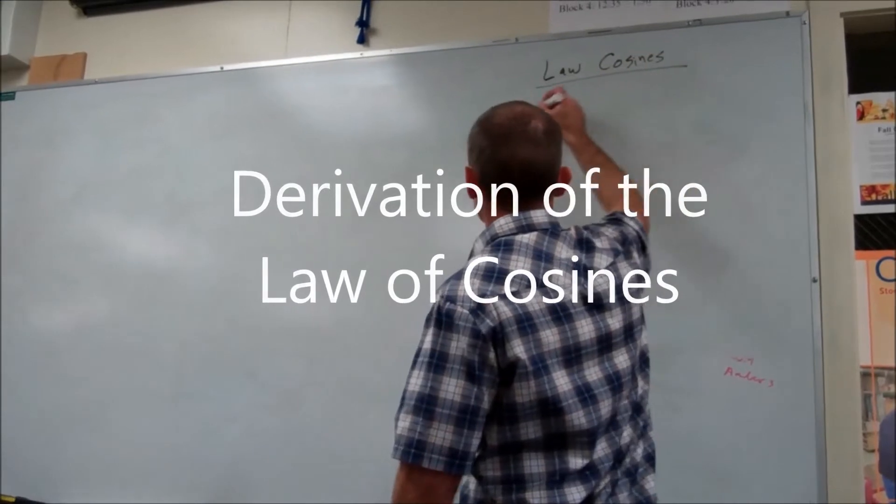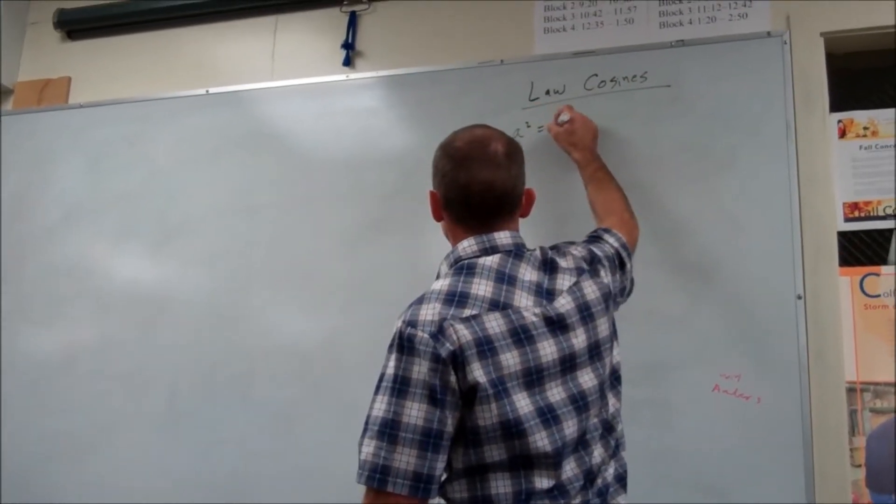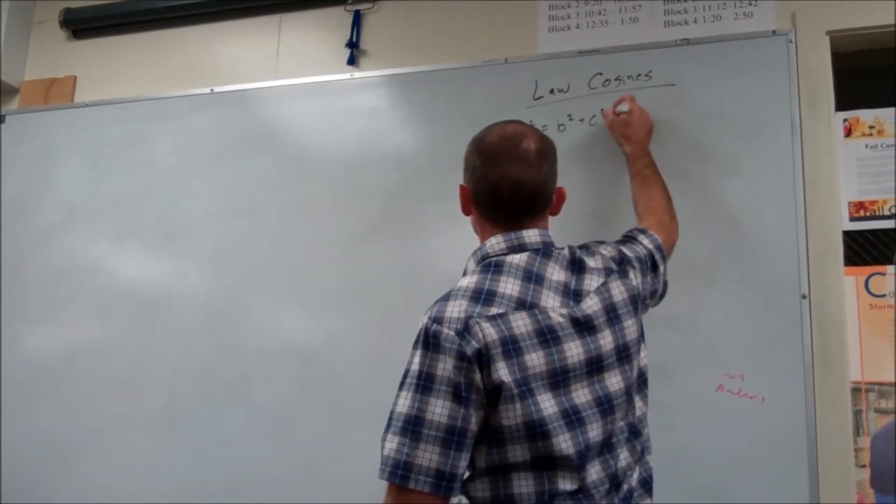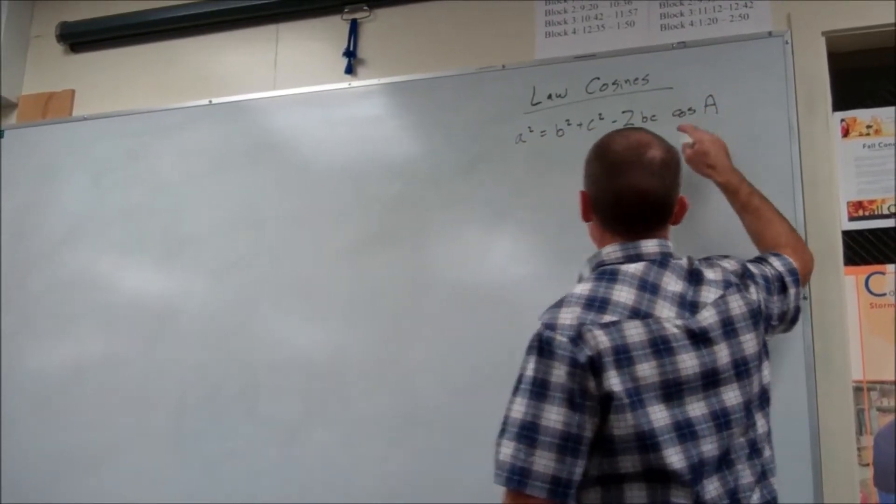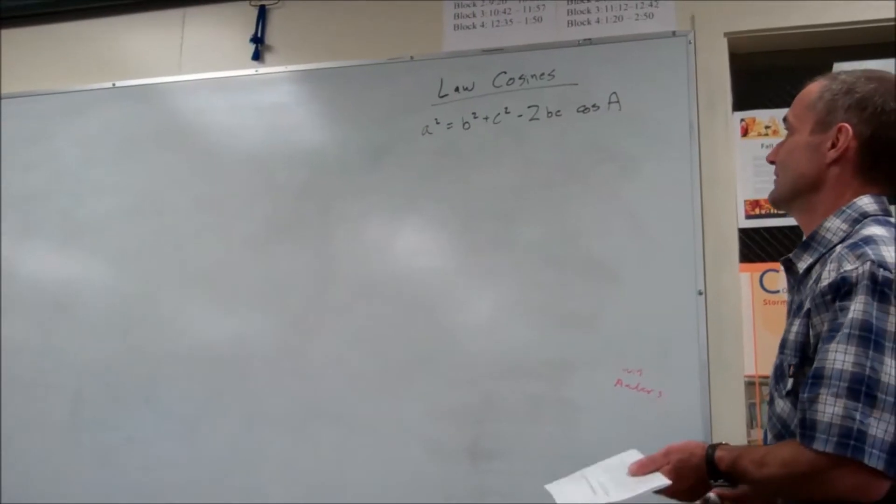So the law of cosines is a squared equals b squared plus c squared minus 2bc cosine of a. And it's pretty long and complex, but it's actually not too hard.